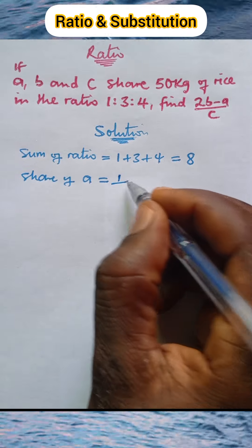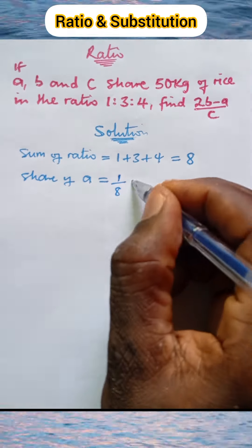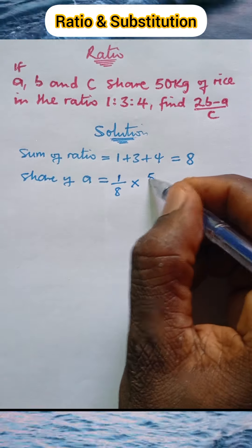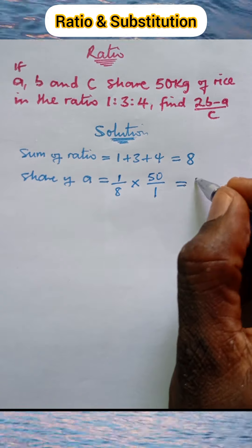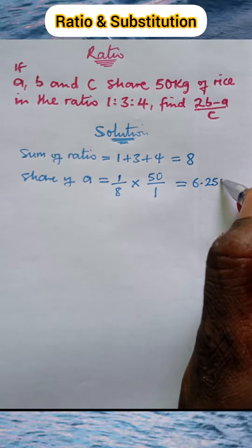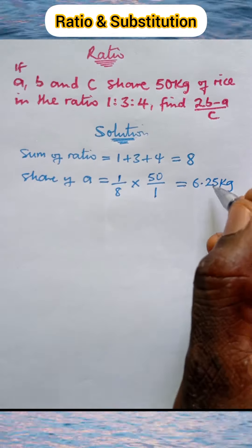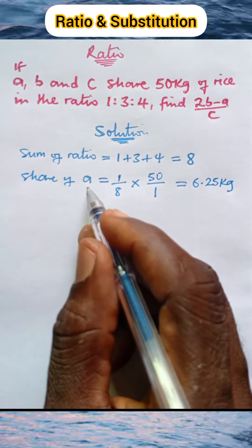is 1 over the sum of the ratio, which is 8, multiplied by the amount of rice, 50 over 1. When you work this out, it gives us 6.25 kilograms. This is the quantity of rice that goes to a.